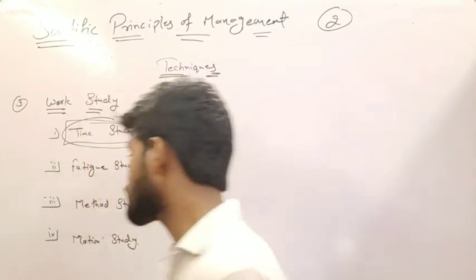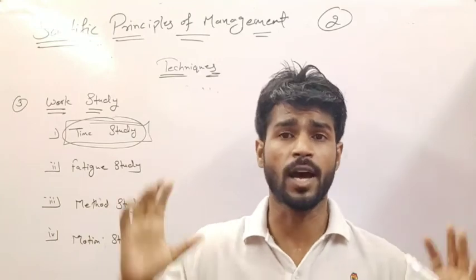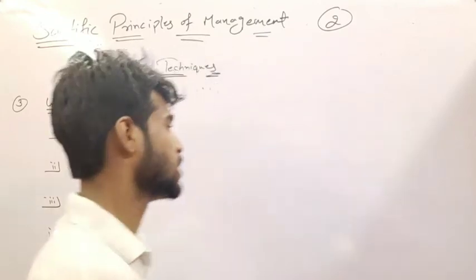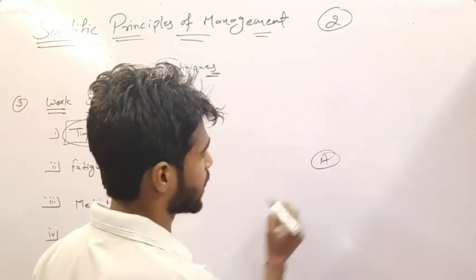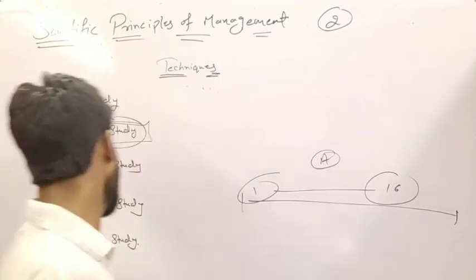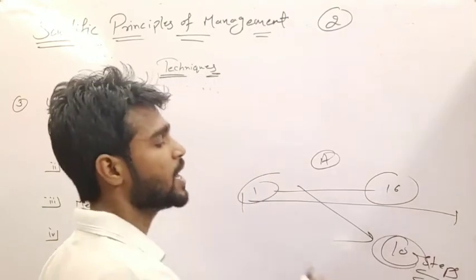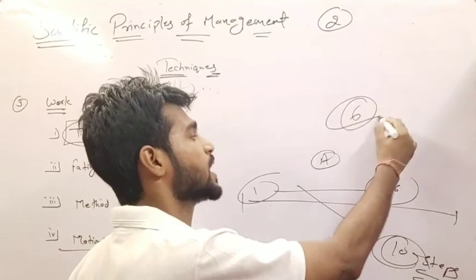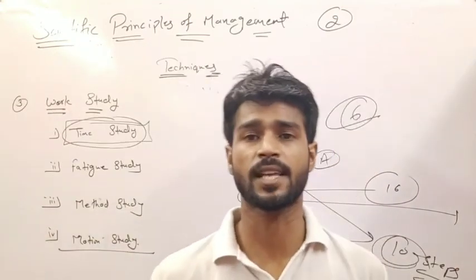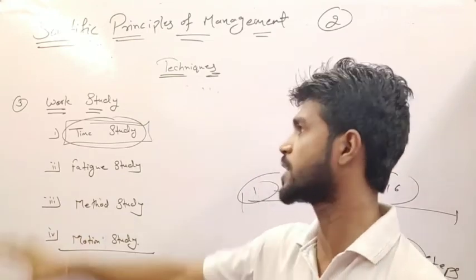Next is motion study. In motion study, there are many sequences of work, and some sequences are not necessary. Unnecessary sequences and unnecessary steps are removed, keeping only the most important steps needed to complete the work. For example, if we have 16 steps and after doing motion study we find that 10 steps are unnecessary, then only 6 steps need to be followed. This reduces time, cost, and labor. This is our work study.